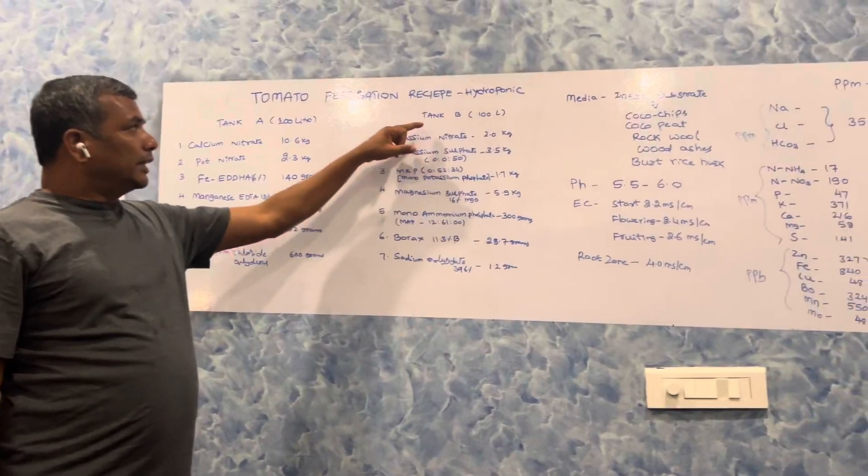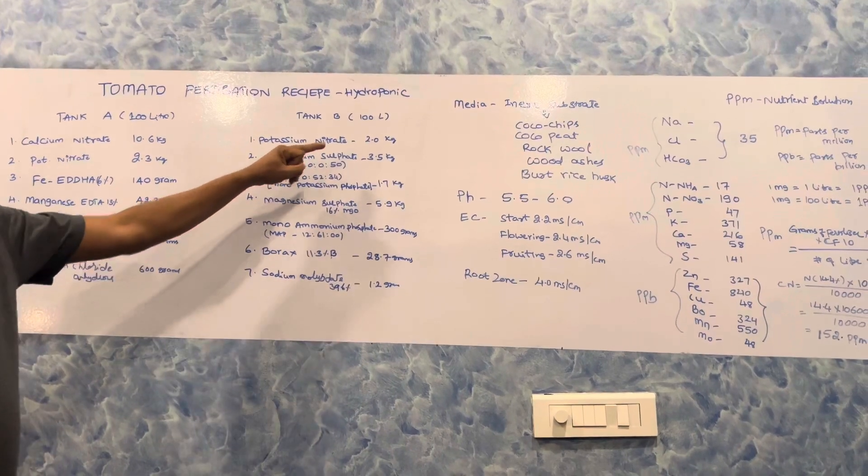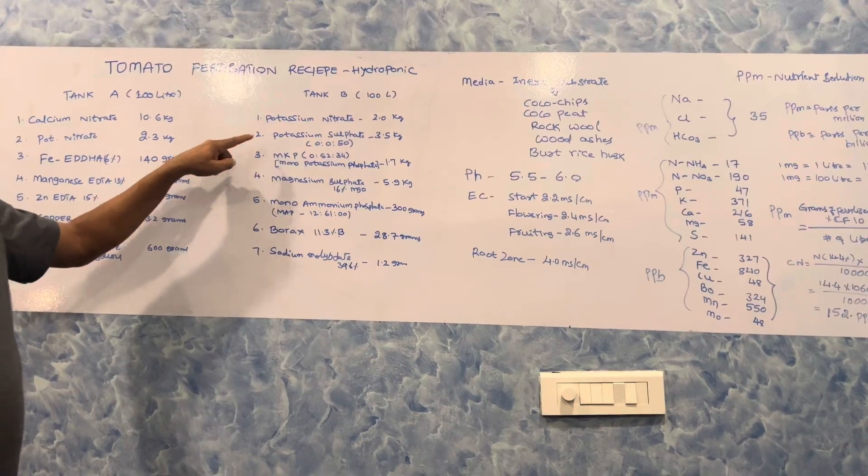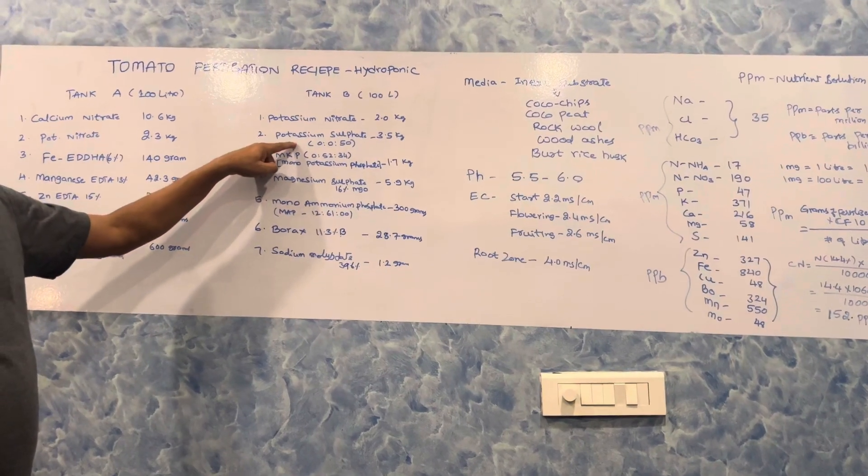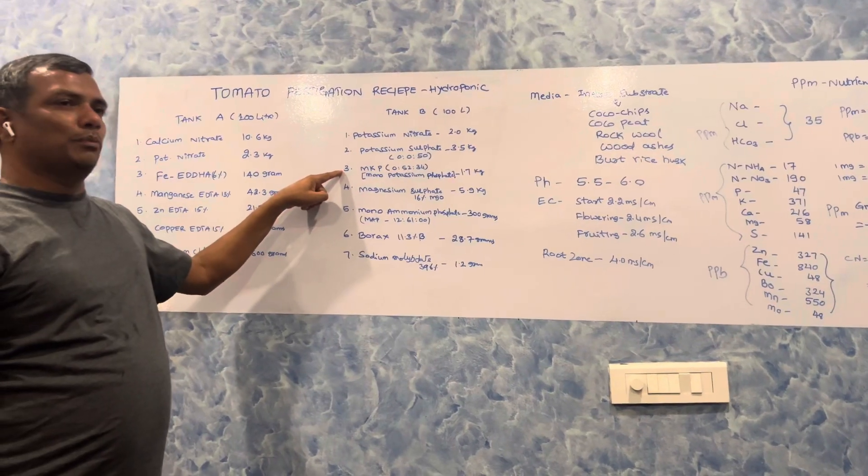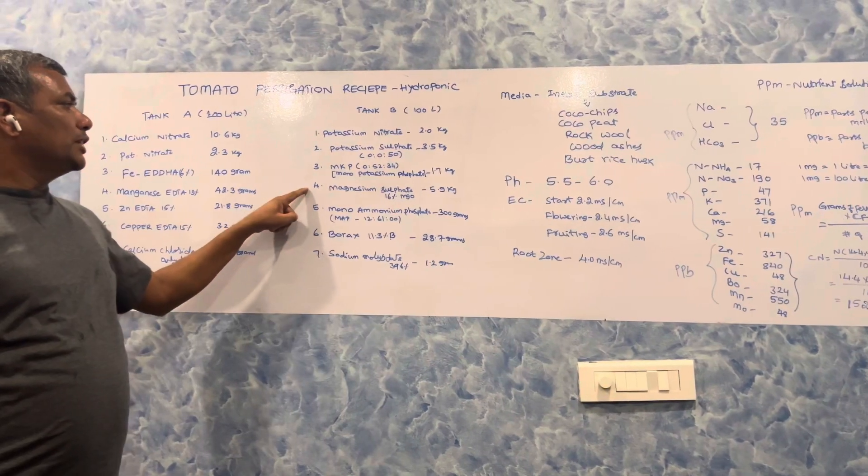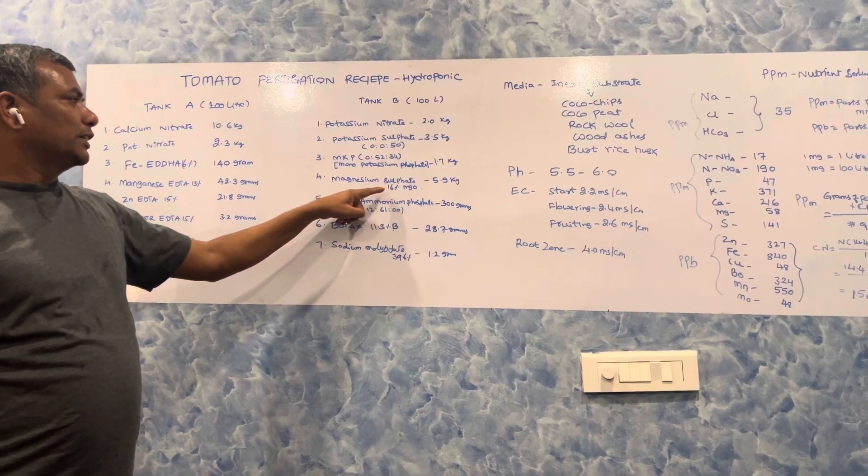Next, Tank B, 100 liters water. Potassium nitrate 2 kg, potassium sulfate 3.5 kg (0-0-50, also called sulfate of potash), mono potassium phosphate 0-52-34, 1.7 kg, magnesium sulfate which contains 16% magnesium in the form of magnesium oxide, 5.9 kg.